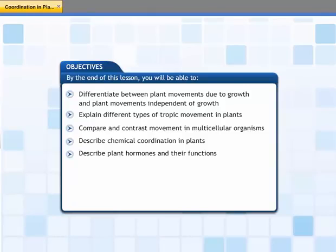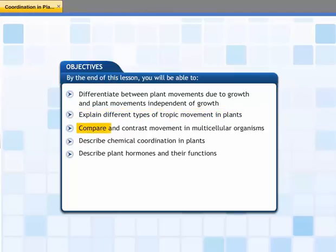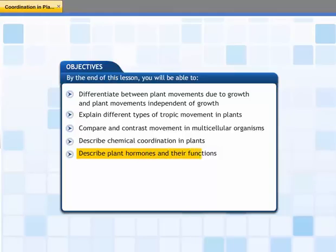In this lesson, you will learn about the types of coordination in plants. At the end of this lesson, you will be able to: differentiate between plant movements due to growth and plant movements independent of growth; explain different types of tropic movement in plants; compare and contrast movement in multicellular organisms; describe chemical coordination in plants; and describe plant hormones and their functions.